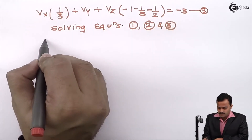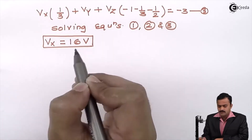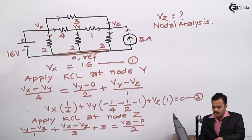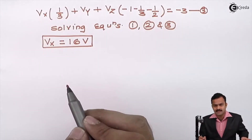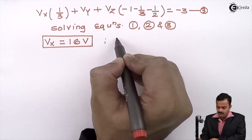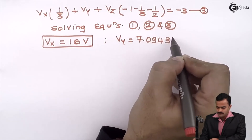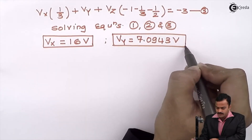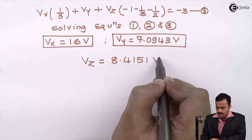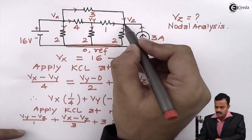Solving equations 1, 2, and 3, I get Vx as 16 volts. Since I am getting Vx equal to 16 volts after solving — the same value as in equation 1 — I can say that whatever method or calculations we have done are correct. Then I get Vy equals 7.0943 volts, and finally Vz equals 8.4151 volts.